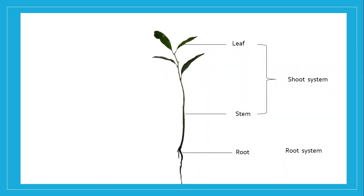The shoot system is the above-ground part, consisting of leaves and stems and other associated parts like the flowers and the fruits, as we can see in the diagram. And we have what we call the root system, mainly composed of the roots, which is the underground part of the plant body. The function of the roots is anchorage and support and absorption of water and minerals.